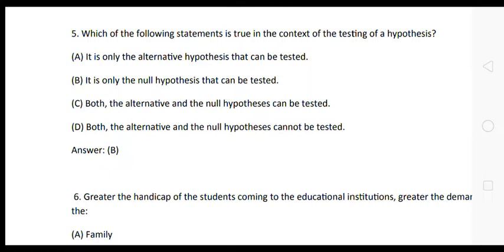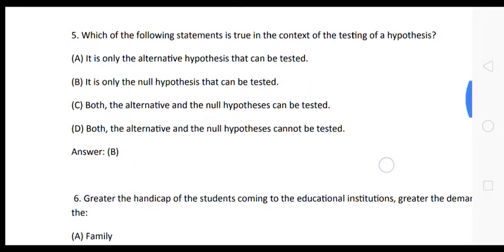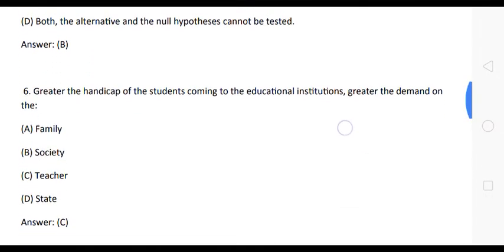The next question is: which of the following statements is true in the context of the testing of a hypothesis? Option A: it is only the alternative hypothesis that can be tested. Option B: it is only the null hypothesis that can be tested. Option C: both can be tested. Option D: both cannot be tested. The correct answer is Option B — only the null hypothesis can be tested.